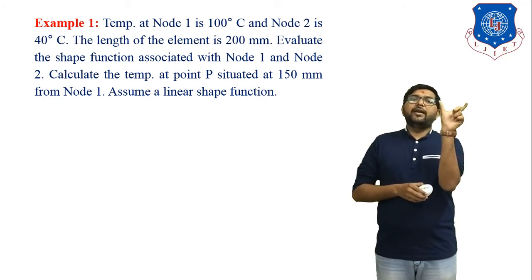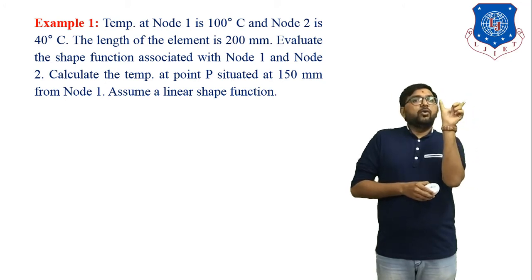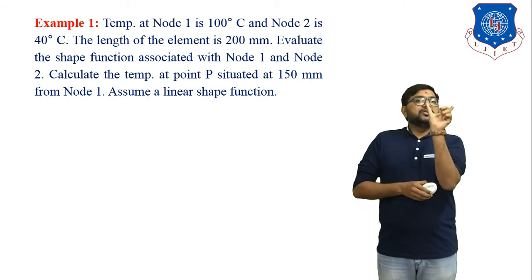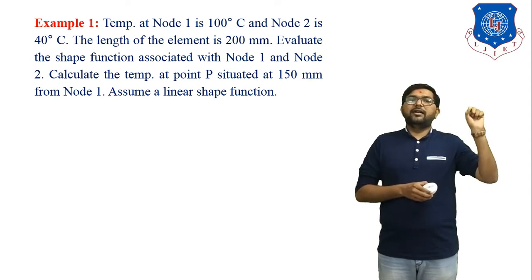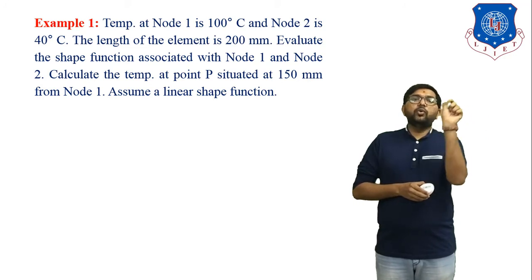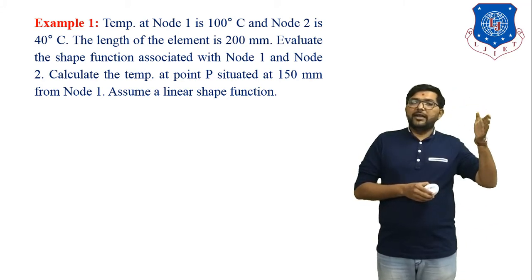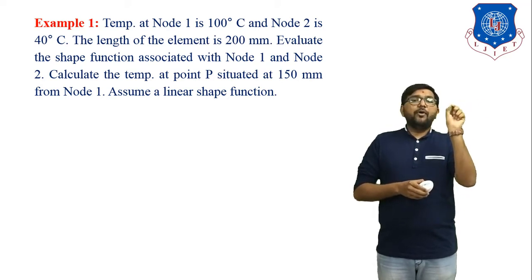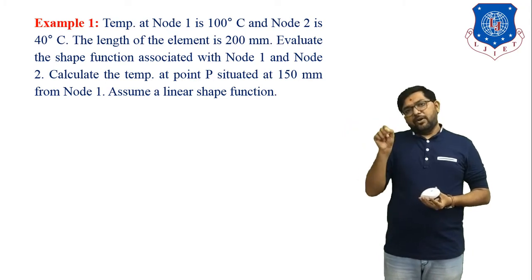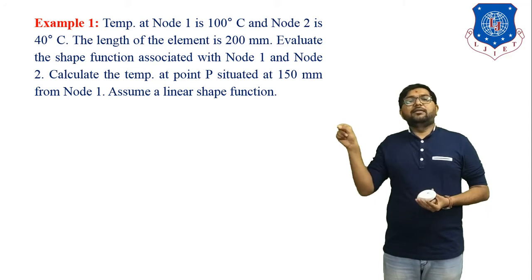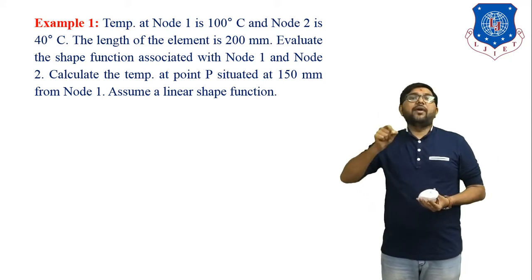Temperature always flows from higher to lower temperature. Temperature at node 1 is 100 degree Celsius and at node 2 is 40 degree Celsius. The total length of the element is 200 mm. We consider the first point at coordinate 0 and the last point at 200 mm, so the length of element is 0 to 200. At the first point temperature is 100 degree and at the last point temperature is 40 degree. Point P is at 150 mm distance from node 1. Total length of the element is 200 mm, and at 150 mm we have to find which temperature exists.